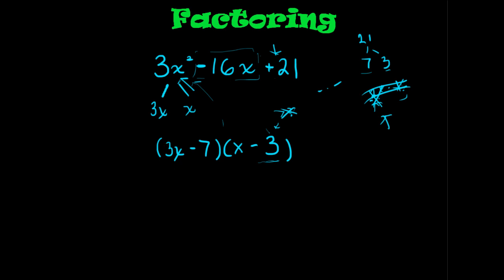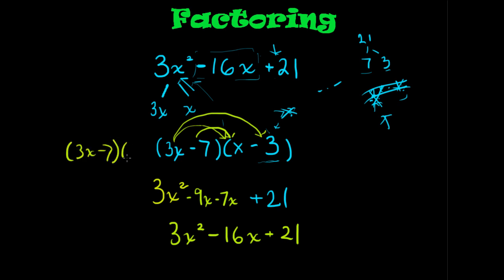3x times -3 is -9x. And -7 times x is -7x. And then -7 times -3 is positive 21. -9 minus 7 is like adding 9 and 7. So, it's 16, but it's negative. 3x² - 16x + 21. So, if a problem says factor completely, factor this expression, or just simply factor, the correct answer here is (3x - 7)(x - 3).